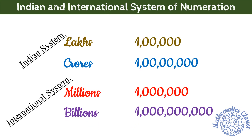In the Indian system, we read larger numbers in Lakhs and Crores. However, in the International system, we read them in Millions and Billions. But इन्हें कैसे read करते हैं, और एक number formation से किसी दूसरे system में कैसे read करेंगे, ये जानने के पहले हम Indian system के बारे में बात करते हैं।